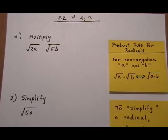Section 8.2, numbers 2 and 3. In section 8.2, we're going to be multiplying, dividing, and simplifying radicals, including square roots and cube roots.